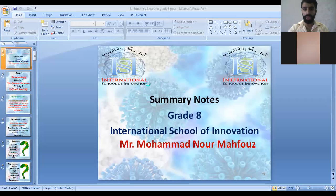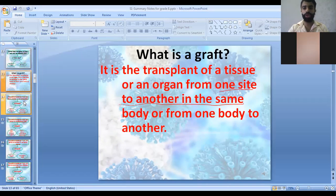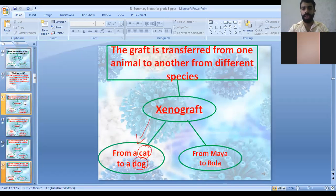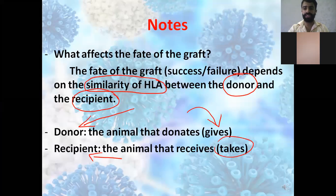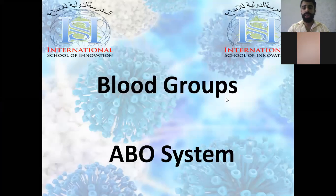The fate of a graft is affected by the degree of similarity of HLA between the donor and the recipient. The higher the HLA similarity between the donor (the one who donates) and the recipient (the one who receives), the higher the chance for the graft to be accepted.